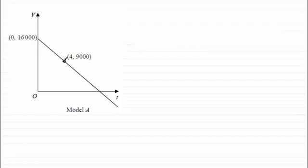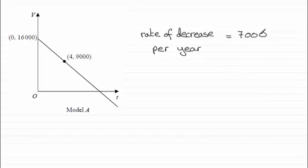And then all we need to do is divide 7,000 by four and that will give me how much the rate of decrease is per year. So that'll be 7,000 divided by four and if you do that you'll find that you get 1,750 and that's barrels.